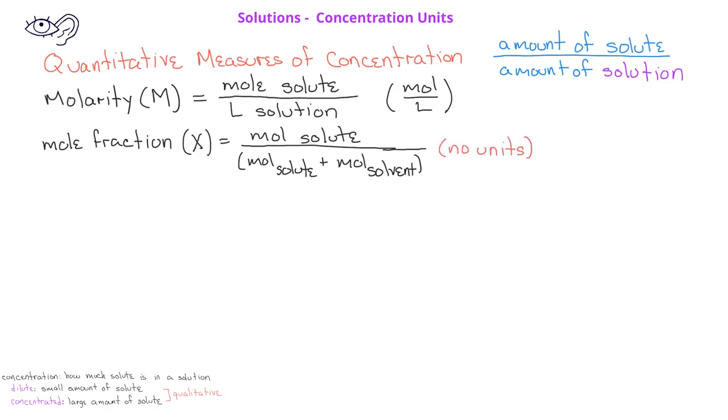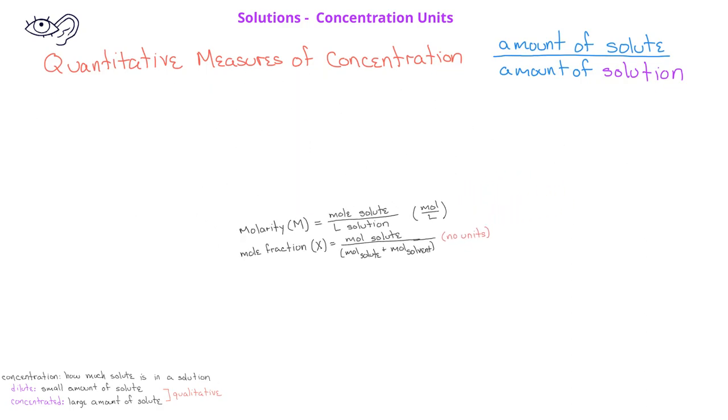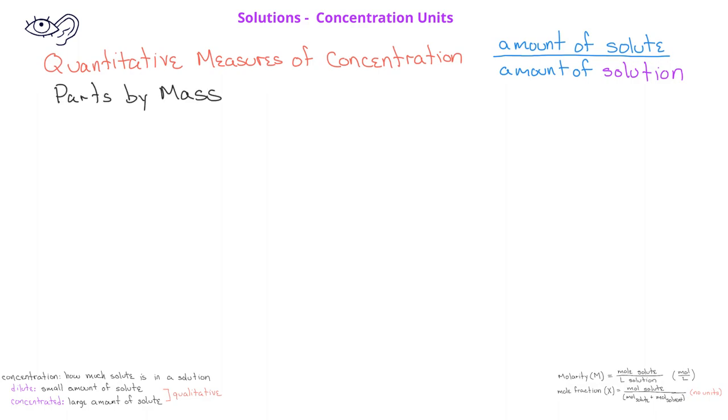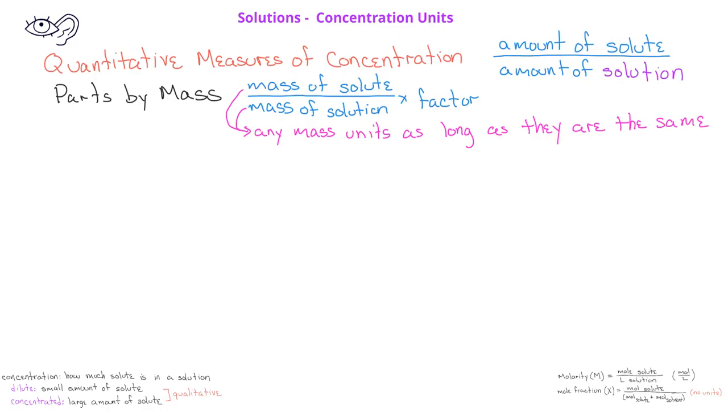Another kind of concentration unit is known as parts by mass, and there's actually three different concentration units that are considered parts by mass types of units. All three of these can be found by taking the mass of the solute divided by the mass of the solution and multiplying by some factor. It's important to remember that whatever units you use for the mass of the solute, you have to use the same mass units for the mass of the solution.